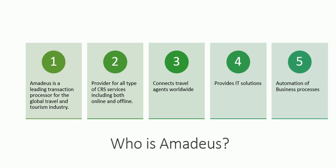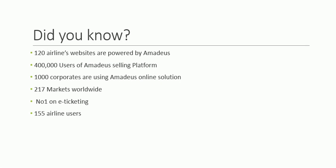This company has a worldwide network for connecting travel providers and travel agents through a highly effective processing platform. Did you know that currently 120 airline websites are powered by Amadeus? 400,000 users are using the Amadeus selling platform. 1,000 corporate organizations are using the Amadeus online solutions, and 217 markets worldwide use Amadeus. It is number one in e-ticketing, with 155 airline users and presence in more than 150 organizations.